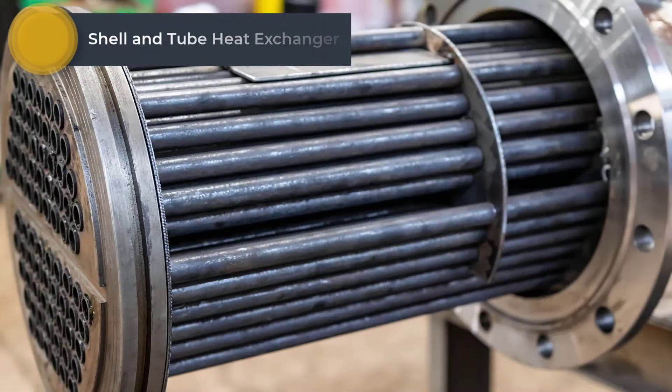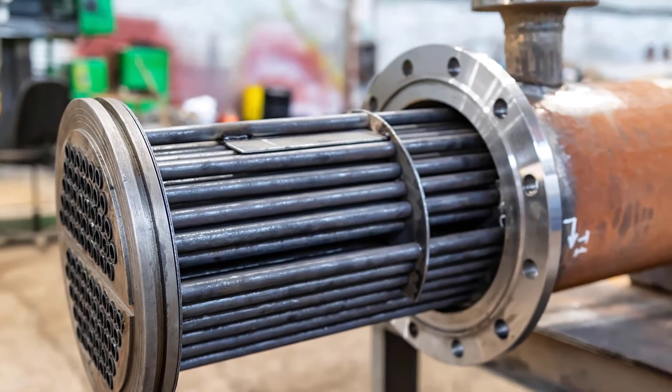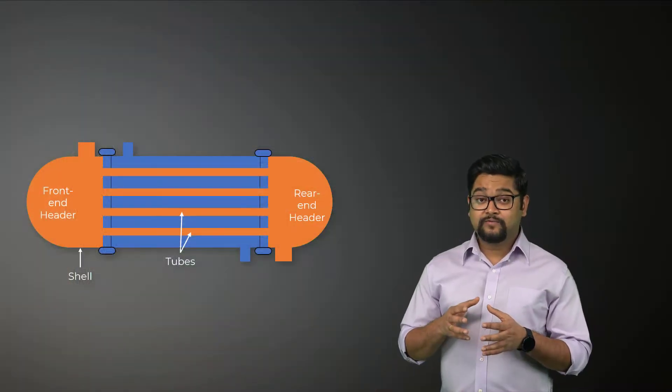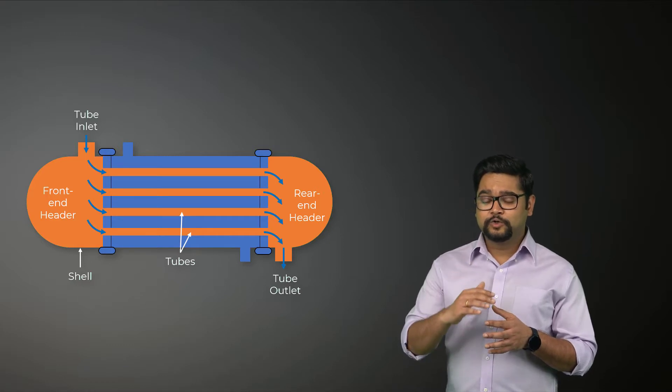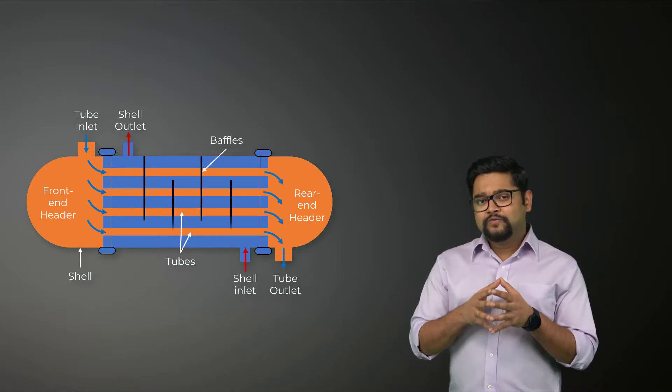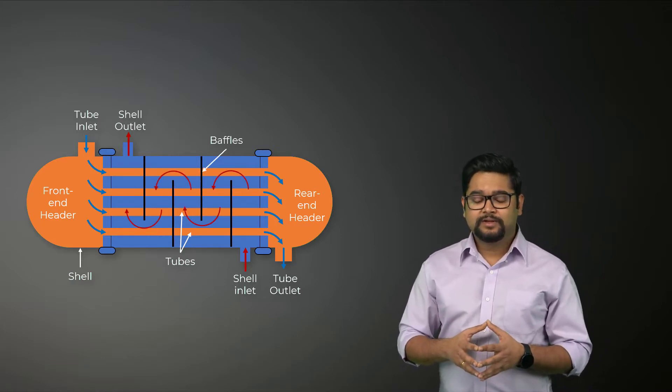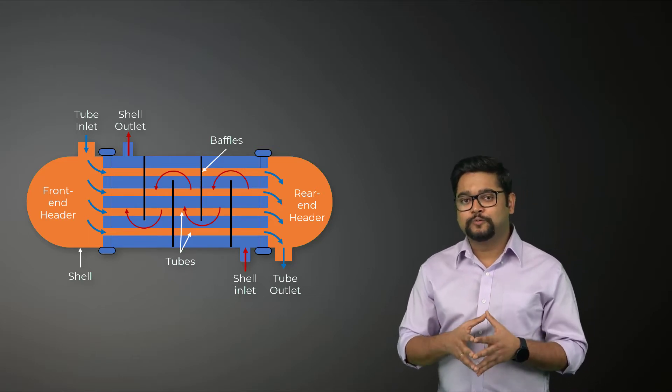Shell and tube heat exchangers contain a large number of parallel tubes packed inside a shell. Heat is exchanged as one fluid flows through the tubes, while the second fluid flows outside the tubes through the shell. Baffles are placed in the shell to force the shell side fluid to flow across the shell and enhance heat transfer. It also supports and maintains uniform spacing between the tubes.